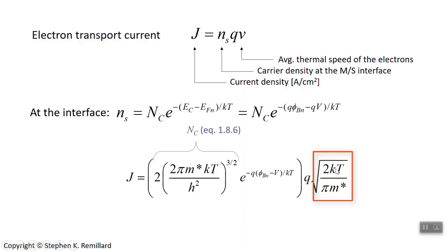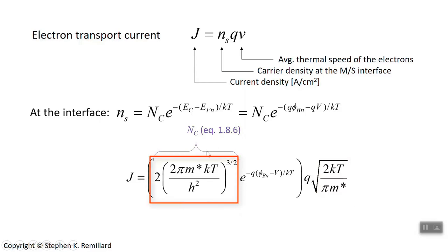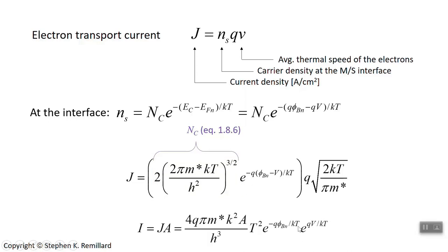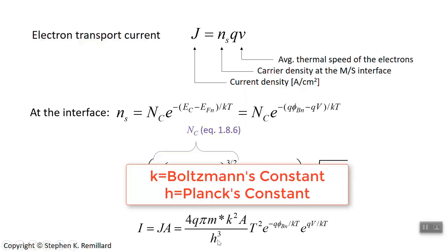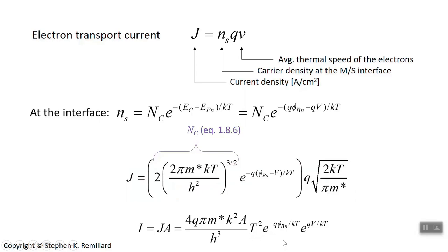The average velocity is √(2kT / π·m*). N_c, the effective carrier concentration, has a strong temperature dependence — proportional to T^(3/2), with everything else being constant. Pulling out the factor e^(qV/kT), everything else — effective mass, Boltzmann's constant, Planck's constant, temperature, and Schottky barrier height — is constant at a given temperature. We call this grouped quantity a coefficient; if temperature changes, it changes, but at fixed temperature it is a well-defined constant.